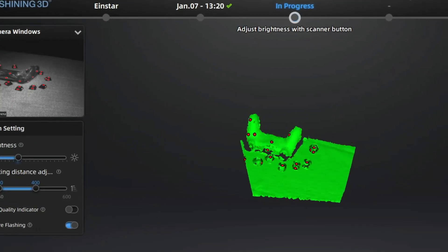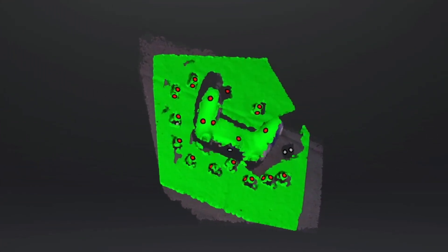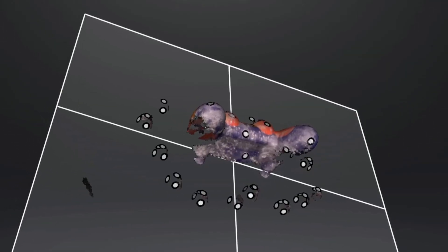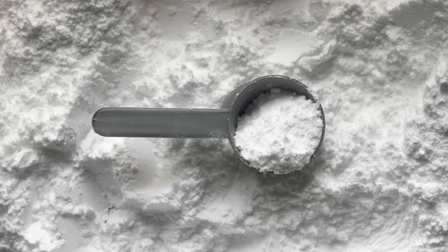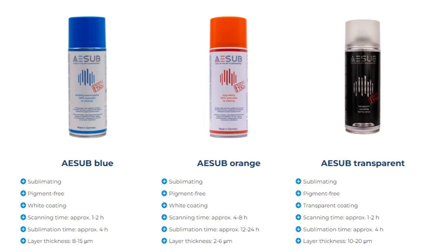First we're going to 3D scan the controller using the Einstar. After our first couple of scans we ran into some trouble. The surface is very reflective and it does not pick up good data. As a solution we can just cover the controller in baby powder. There are specialty sprays out there but they are quite expensive.